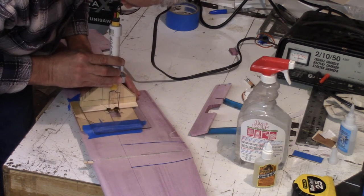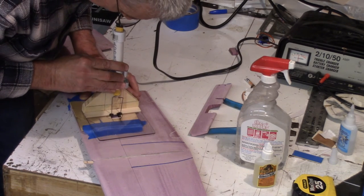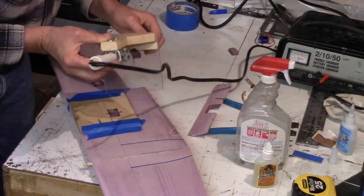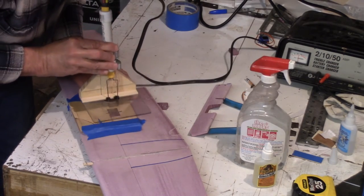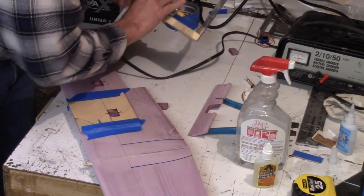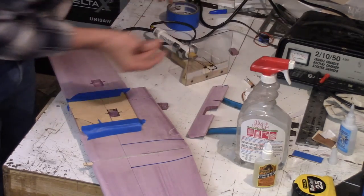So then once I've got it set I just hold it over the template, plunge in and slide it across and raise it straight up and that cuts my pocket. And then for the ears on the servo I have a couple of little slots I just hit those slots and that's it.